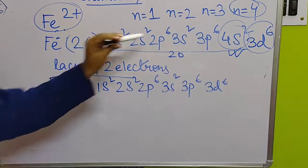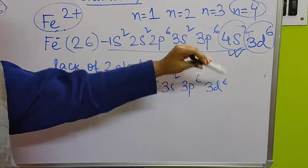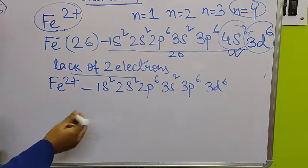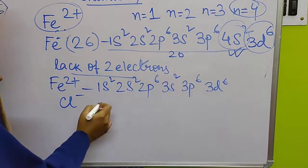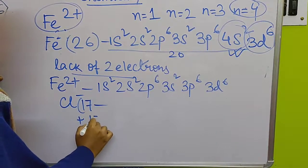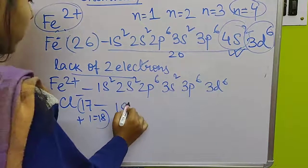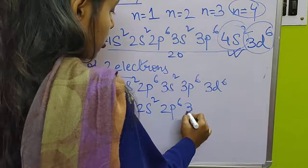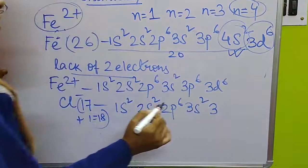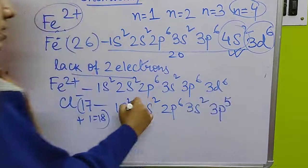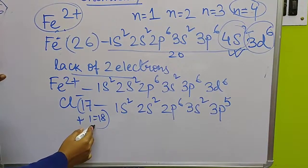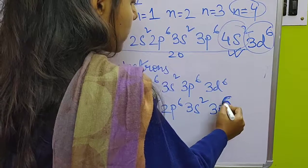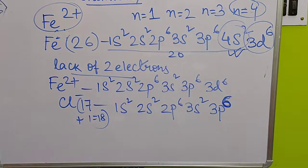Note: when filling up electrons, 4s comes first according to the Aufbau principle — lower energy orbitals fill first. But when removing electrons, remove from the orbital with the higher n value. The same rule applies for Al³⁺ — try that by yourself. For Cl⁻: chlorine normally has 17 electrons, but Cl⁻ has 18 electrons. Configuration: 1s², 2s², 2p⁶, 3s², 3p⁵ for neutral Cl; accepting one more electron fills 3p to give 3p⁶ for Cl⁻.